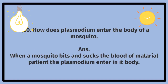How does Plasmodium enter the body of a mosquito? When a mosquito bites and sucks the blood of a malarial patient, the Plasmodium enters its body. Plasmodium machar ke jism mein kaise daakhil hota hai? Jab machar malaria ke mareez ka khoon kaata aur choosta hai to Plasmodium us ke jism mein daakhil hota hai.